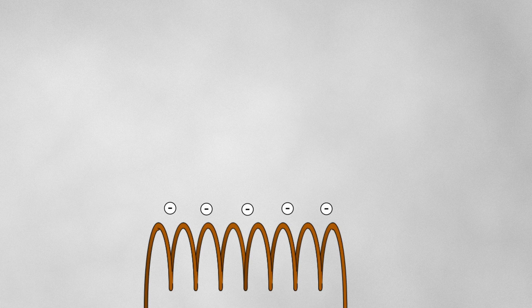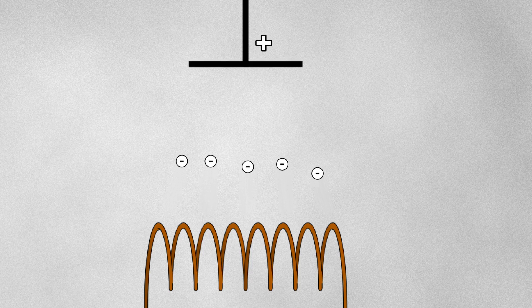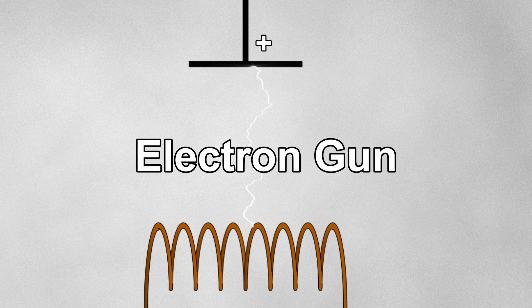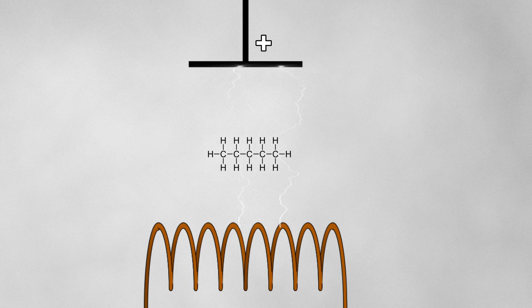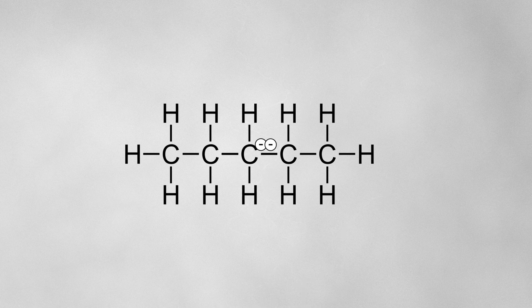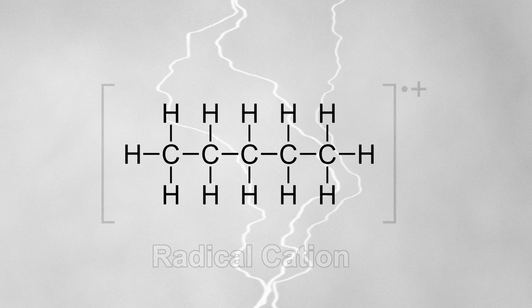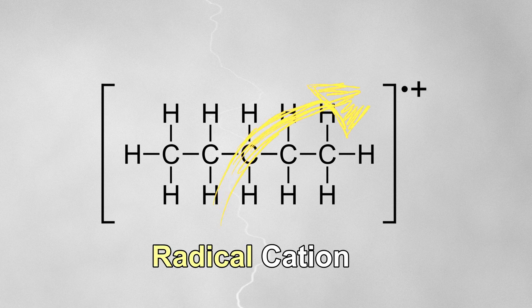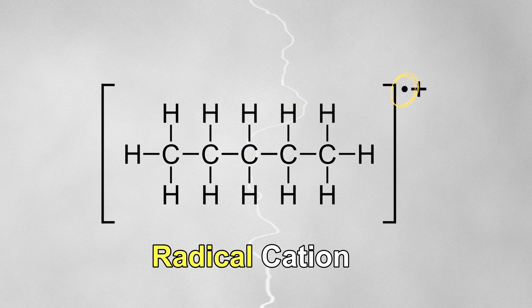With electron ionization, also known as electron impact, a current is passed through a heated filament to liberate electrons. These electrons are attracted to a positively charged electrode on the other side of the chamber to create a beam of high energy electrons, sometimes called an electron gun. If a molecule passes through this beam, a high energy electron can collide with an electron in the molecule, knocking it off and leaving a radical cation. This is a radical with an unpaired electron, which is positive due to the loss of the electron, hence radical cation.